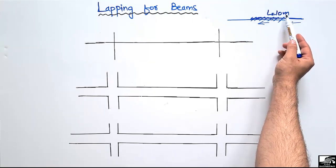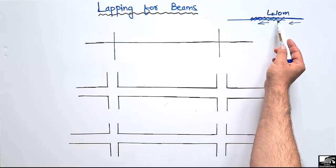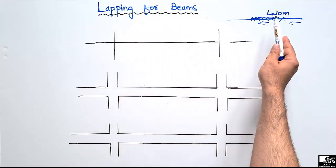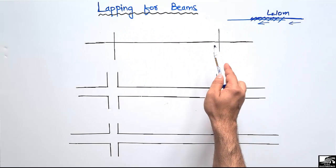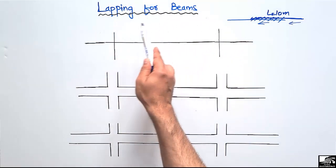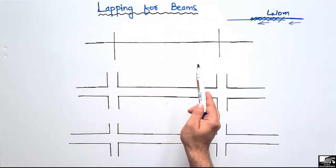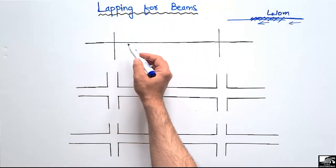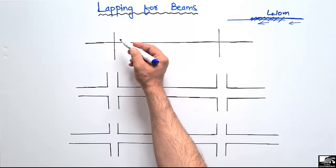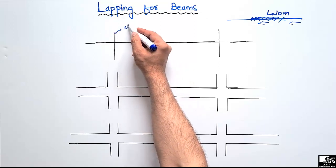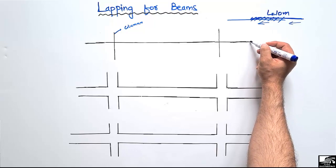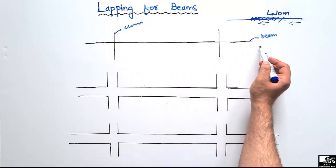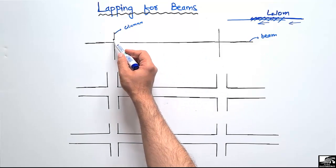Due to the limitation of steel bar length, we have to overlap the bars — this is the main reason why we provide lapping in beams and columns. In this lecture we will discuss lapping length and lapping zones only for beams. Consider a frame structure which is a combination of beams and columns. The vertical members are columns and the horizontal members are beams, joined with the columns.